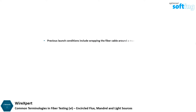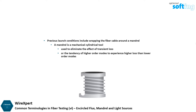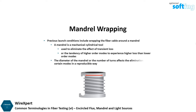The previous launch conditions include wrapping the fiber cable around a mandrel. A mandrel is a mechanical cylindrical tool used to eliminate the effect of transient loss, or the tendency of high order modes to experience higher loss than lower order modes. This method is known as mandrel wrapping. The diameter of the mandrel and number of turns, typically 3 to 5, affects the elimination of certain modes in a reproducible way.